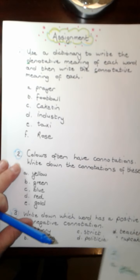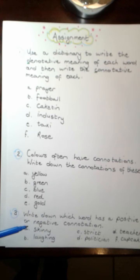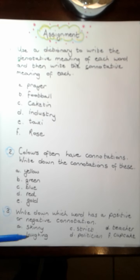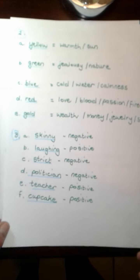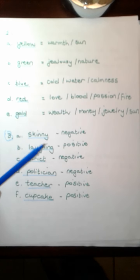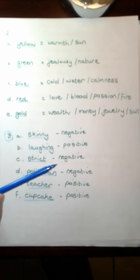Then number three, the question was write down which word has a positive or negative connotation in each of those. Skinny. When I think of skinny, it evokes a negative feeling, maybe. Laughing, positive. Strict, negative. No one likes to be strict or to have strict rules. Politicians, they are also conjuring up negative feelings. Teacher, positive. Cupcake, positive. That was denotation and connotation.